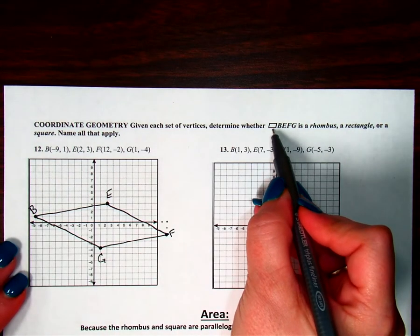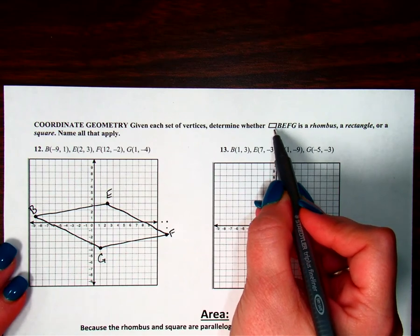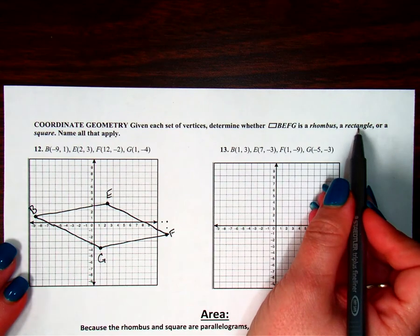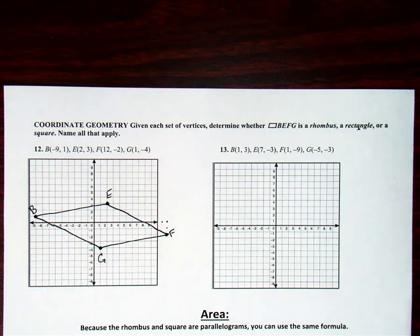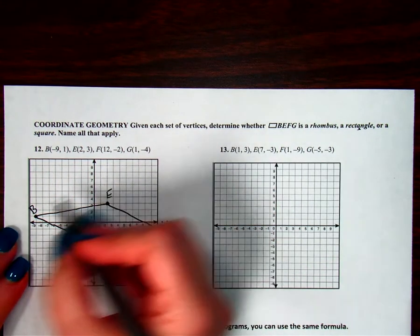Notice right here I have this little parallelogram symbol, so that tells me this is indeed a parallelogram — I already know that. I just need to decide: is it a rhombus, is it a rectangle? If it's a rhombus, all my sides will be the same. If it's a rectangle, my consecutive sides will be perpendicular. And if it's both a rhombus and a rectangle, then I know it's also a square. So first, let's check if it's a rhombus — all sides equal.